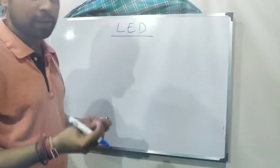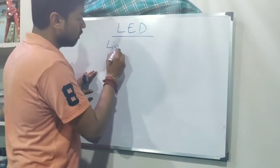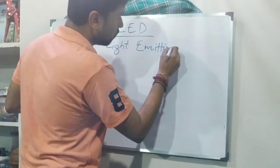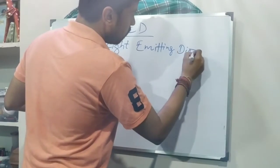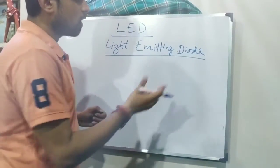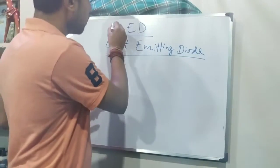LED is an electronic device and the full form of LED is light emitting diode. So what it is? It is light emitting diode. A diode which actually emits or which is capable of emitting light, that is known as LED.